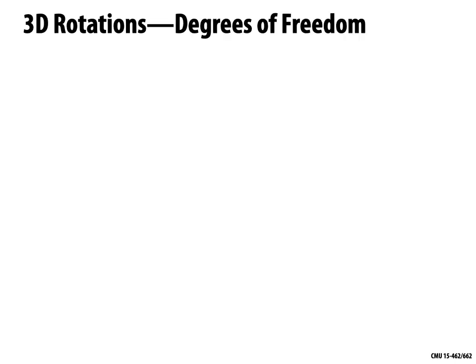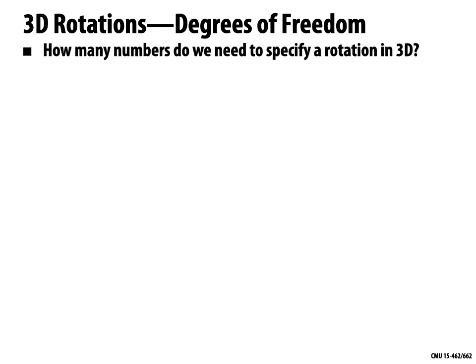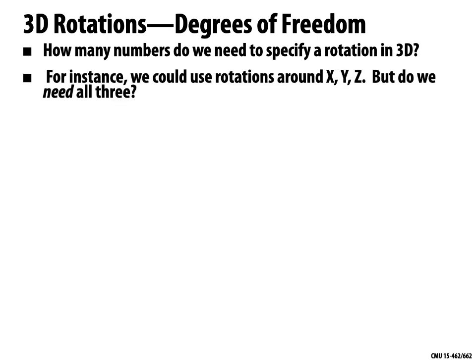To get a bit more in depth, we can start asking questions about rotations — how they behave, what they look like. One really simple question is: how many numbers do we need to specify a rotation in 3D? One really natural idea that a lot of people gravitate toward is to say, it's got to be three, because you specify the angle of rotation around the x-axis and around the y-axis and around the z-axis.